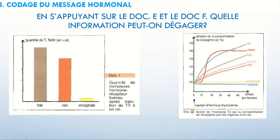Et pour les deux derniers documents de ce tableau, en s'appuyant sur le document E et F, quelle information peut-on dégager ? Le document F représente la quantité de complexes hormones-récepteurs formés après injection de T3 à un rat. Donc les deux sont liés. J'ai vu là comment la consommation de O2 a varié, et j'ai vu là la quantité de T3 fixée au niveau de chaque organe, c'est-à-dire la quantité de complexes hormones-récepteurs formés.